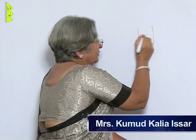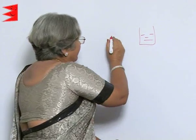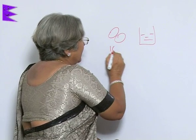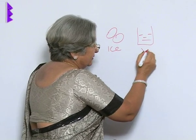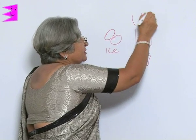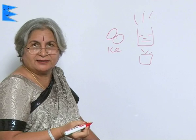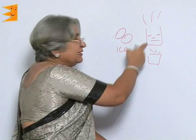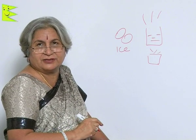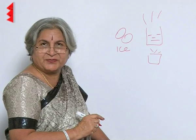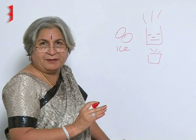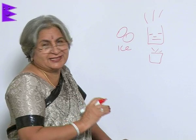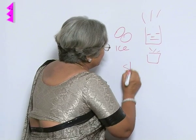Are all forms of matter identical? Certainly not. Take a little water and put it in a freezer — it changes into ice. Heat it and it starts changing into steam. Has water changed? No, it is water only. In all three cases it is made up of hydrogen and oxygen in the ratio of 1 to 8. So that means it is the same matter but it exists in different states. This is what is called states of matter.